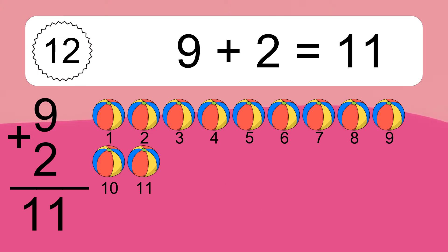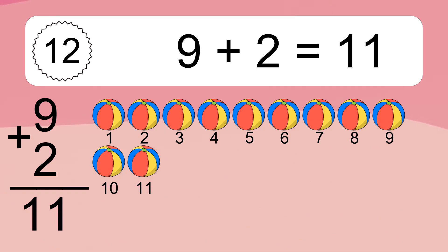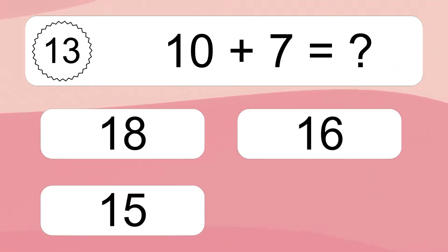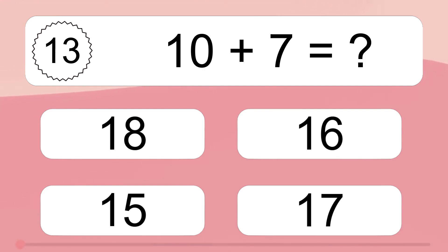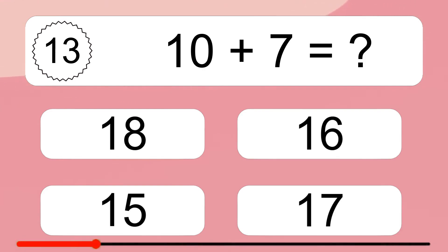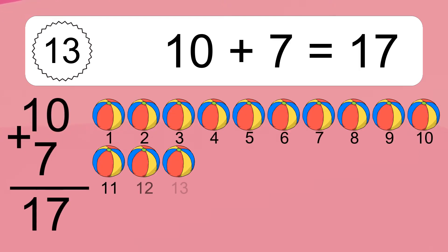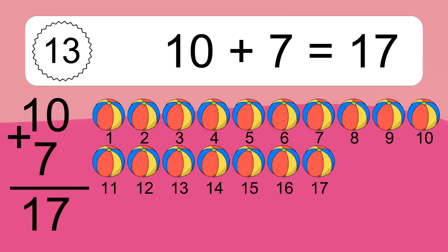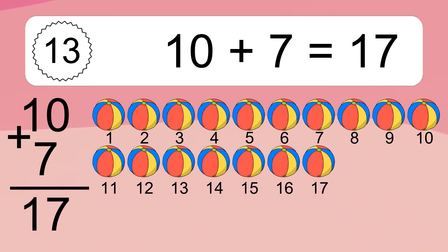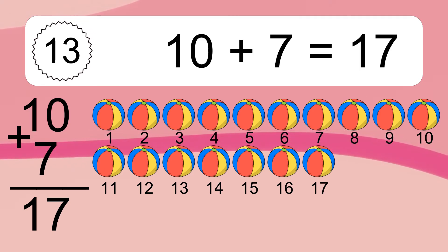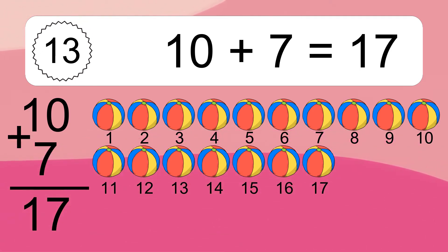Let's count it. 1, 2, 3, 4, 5, 6, 7, 8, 9, 10, 11. 1, 2, 3, 4, 5, 6, 7, 8, 9, 10, 11, 12, 13, 14, 15, 16, 17.